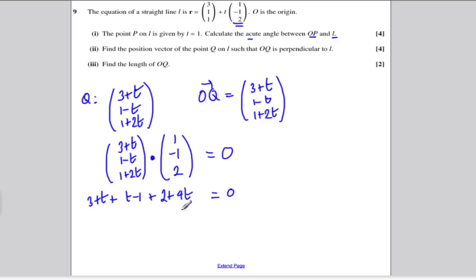Collect T's: 1T, 2T, and another 4T is 6T. 3 - 1 is 2, plus 2 is 4, and you get 0. Solving for T here, subtract 4 from both sides and divide by 6, T would equal -2/3. So we found that T is -2/3. Substituting that back into this equation, what is the position vector of Q? Q would be 3 - 2/3, and it would be 1 - (-2/3), so 1 + 2/3, and 1 + 2 lots of -2/3, which would be 1 - 4/3.